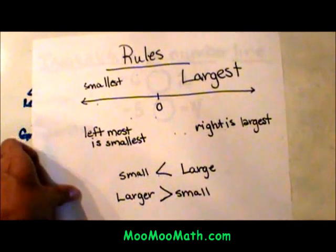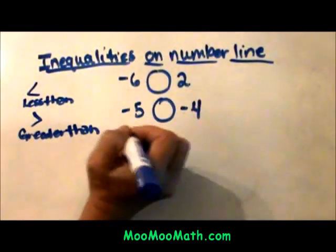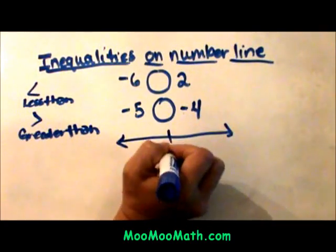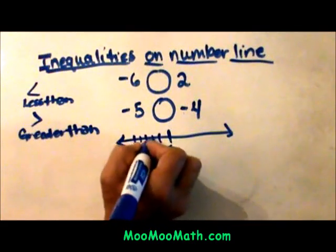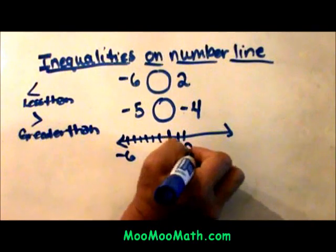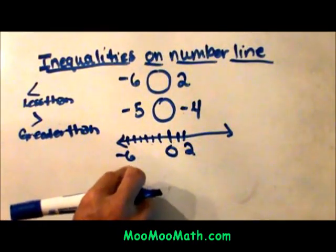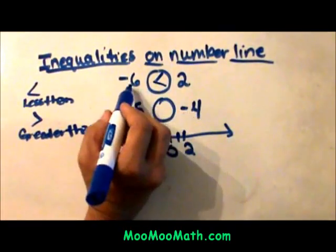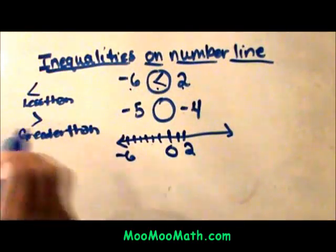Let's compare these on a number line. We have negative 6 comparing to positive 2. Here is my zero and negative 6 falls over here. The left most number is negative 6. That means it is the smaller number. It uses the less than sign. Negative 6 is less than positive 2 and negatives are always smaller than positives.